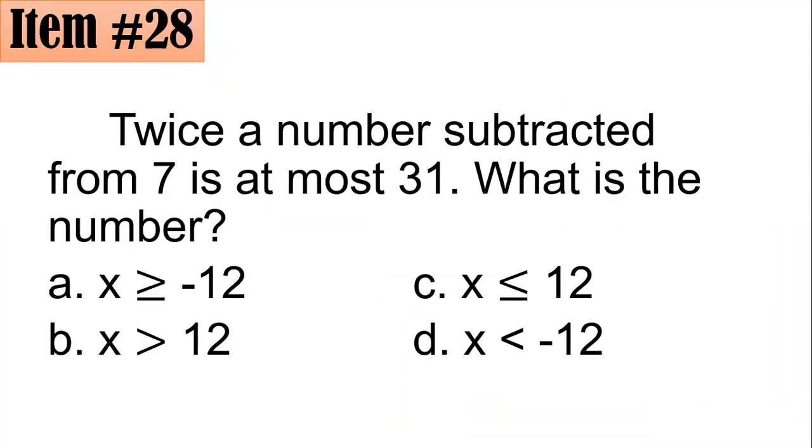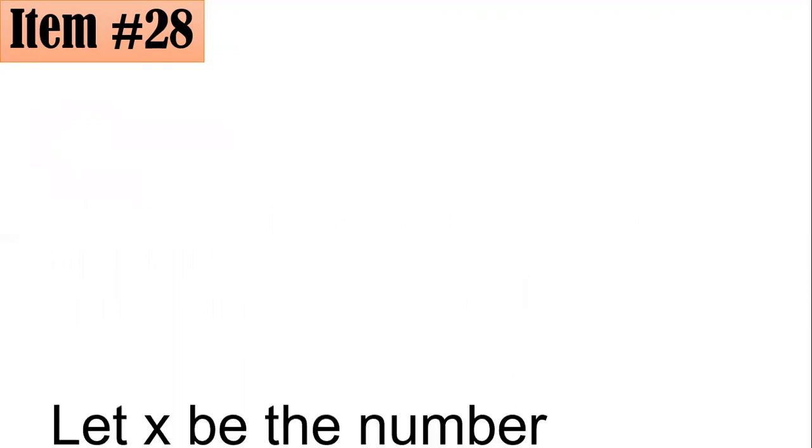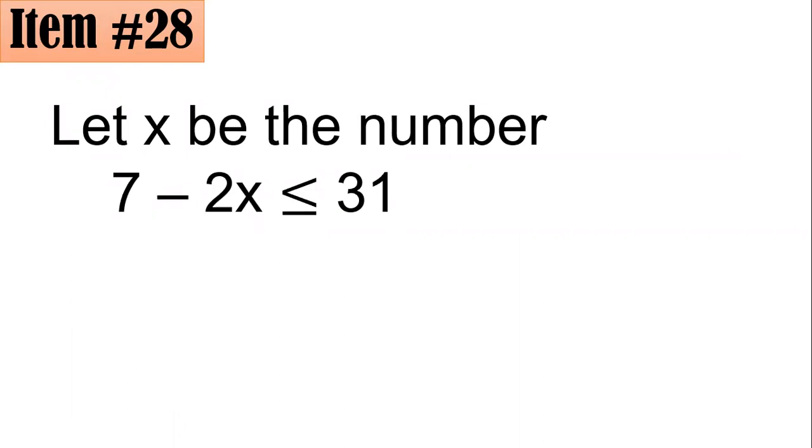Number 28. Twice a number subtracted from 7 is at most 31. What is the number? Is it x greater than or equal to negative 12, x is greater than 12, x is less than or equal to 12, or x less than negative 12? What do you think? We have to understand what is meant when we say at most. Remember in algebra, when we say at most, then the certain value should not exceed that number. So twice a number subtracted from 7 should not exceed 31. If x is the number, then this implies that 7 - 2x is less than or equal to 31.